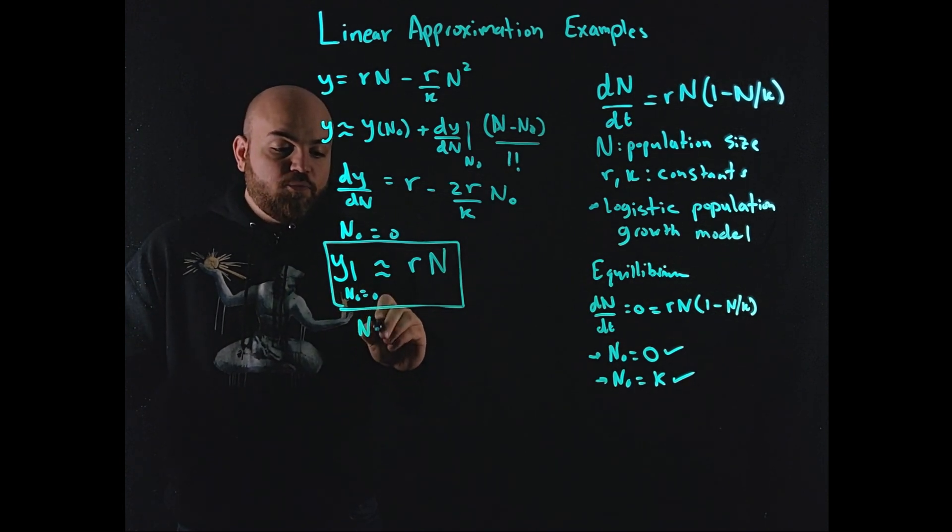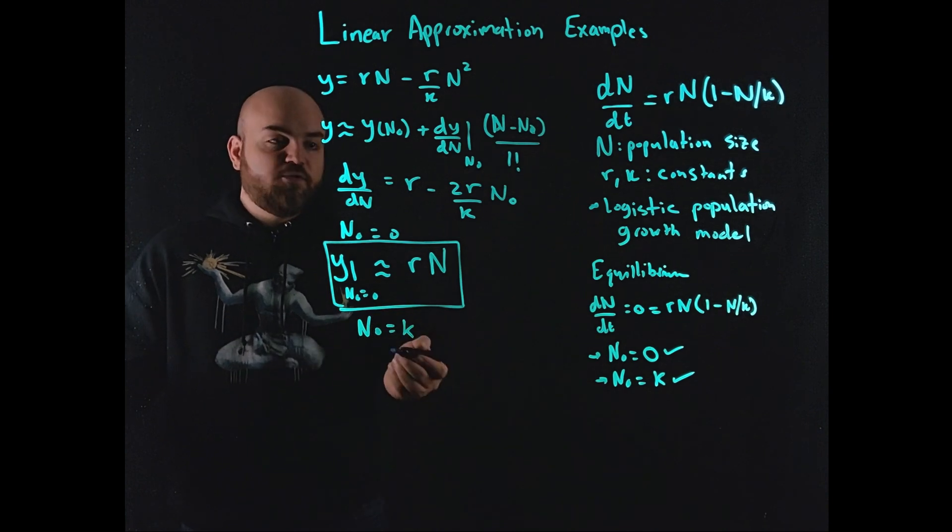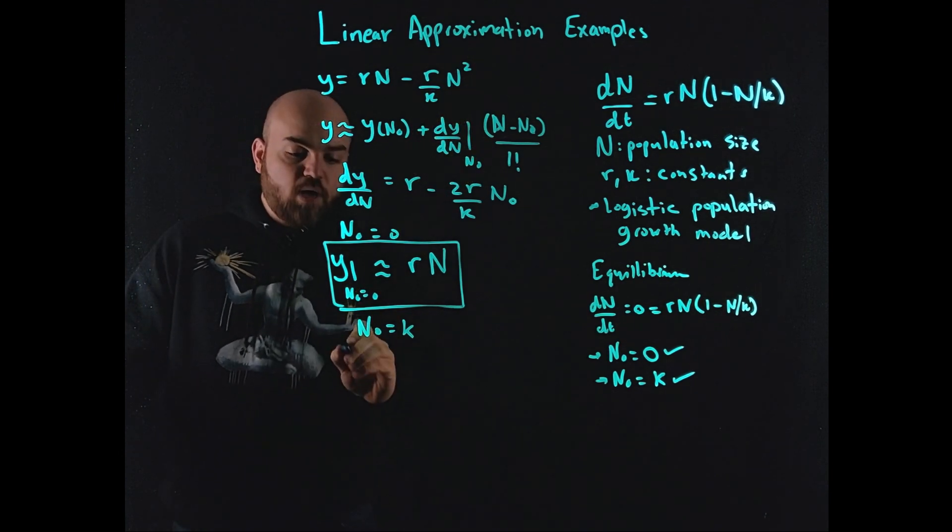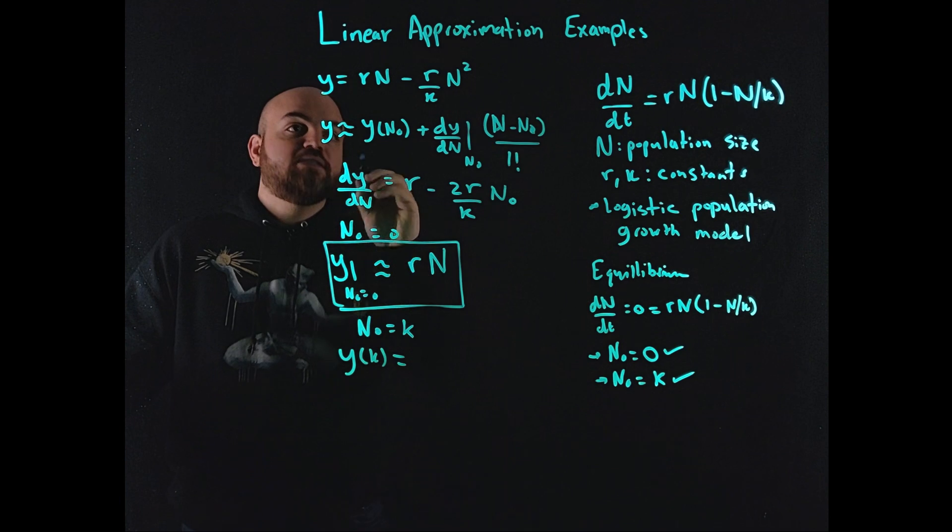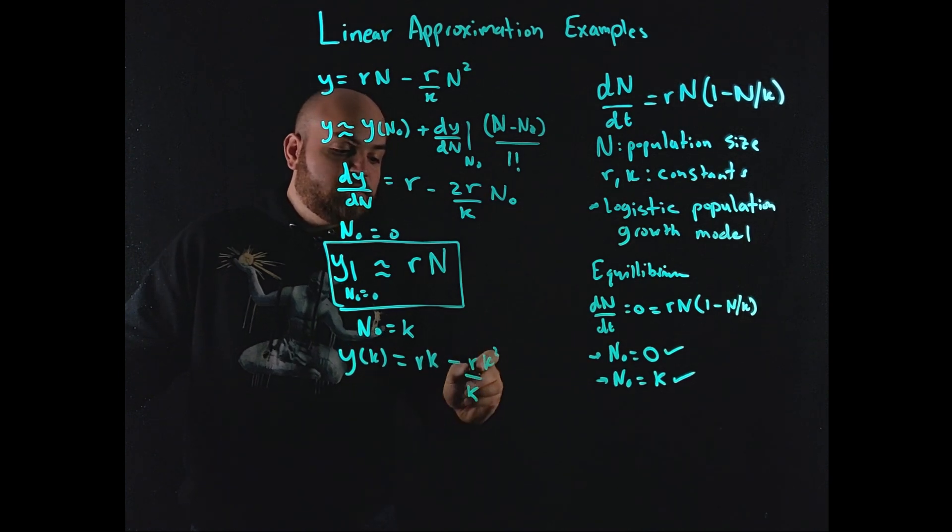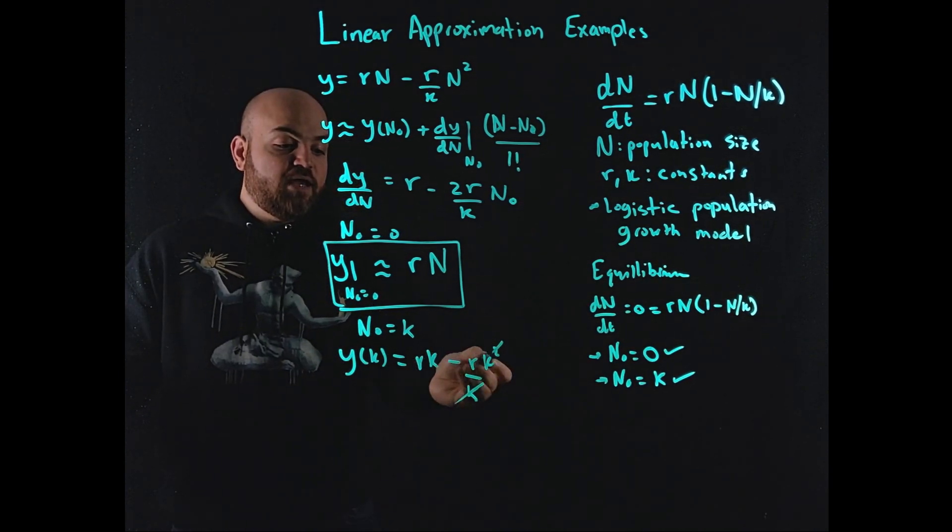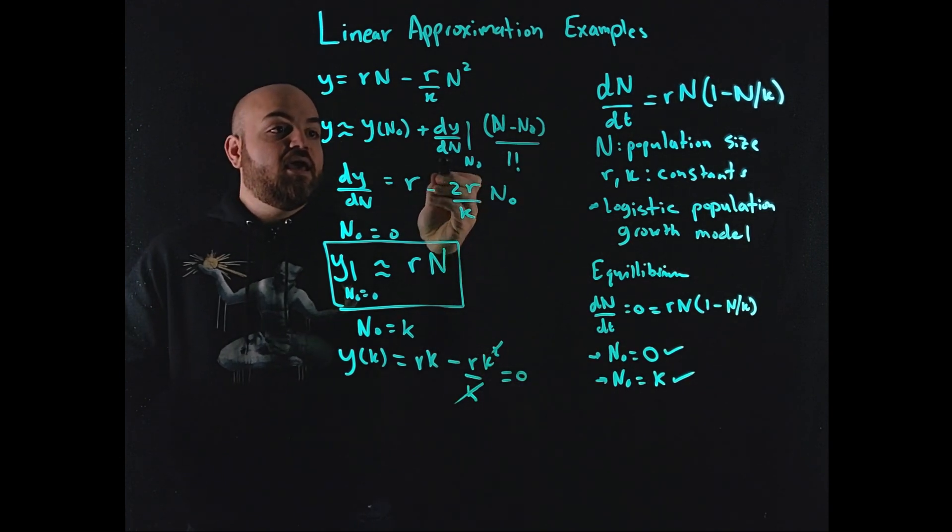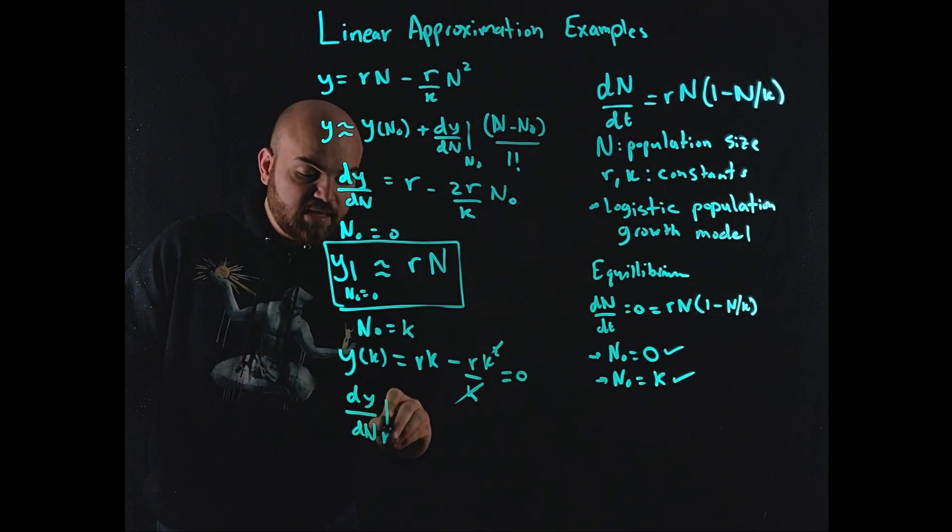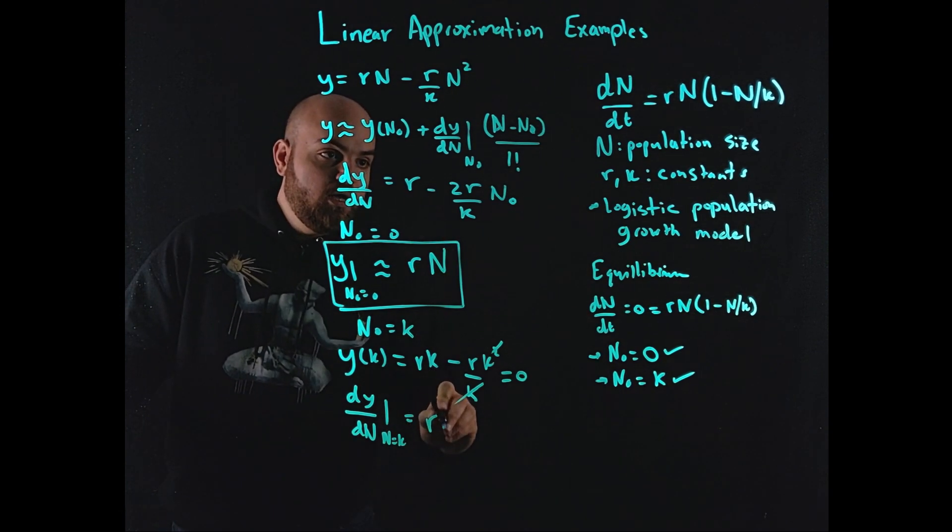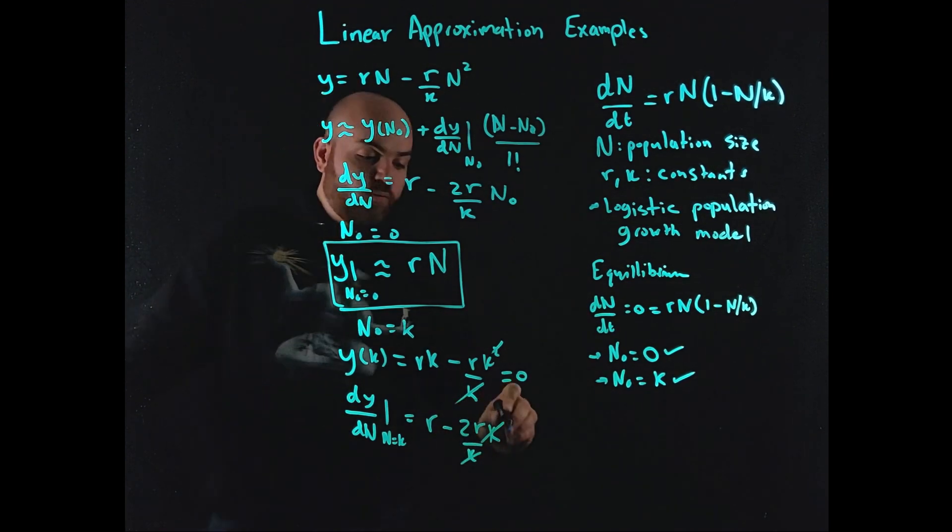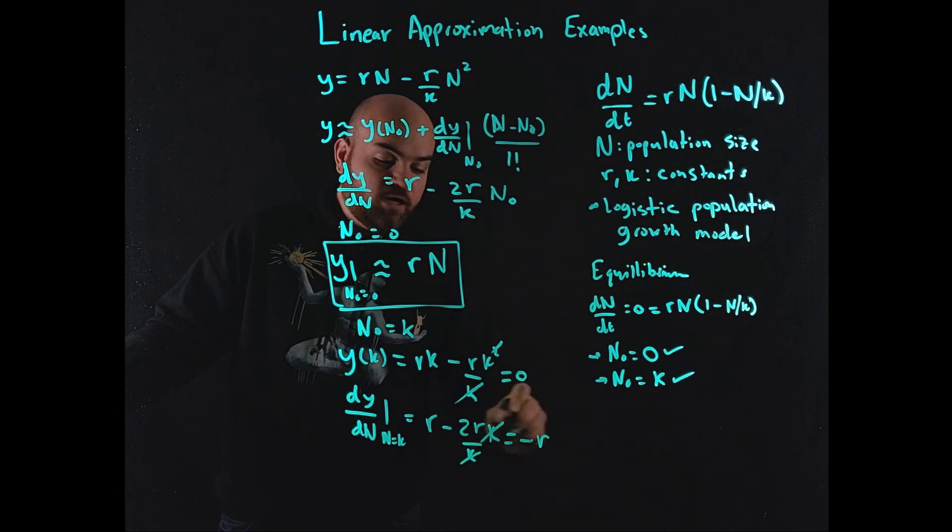And now for the point where n naught is equal to k, I get another approximation at a different point. If we substitute k here, what do we get for n? This is n squared, right? So y at k, what is that equal to? rk minus rk squared over k. So this term goes away and this term goes away. And then rk minus rk ends up to be 0. Interesting. And then we have the derivative. So dy over dn at n equals k. What is that going to be? r minus 2r over k times k. So this term goes away with this term. And what we're left with is minus r, right?